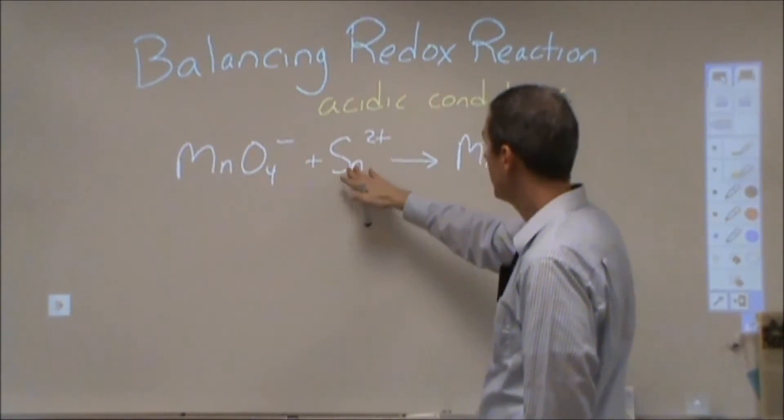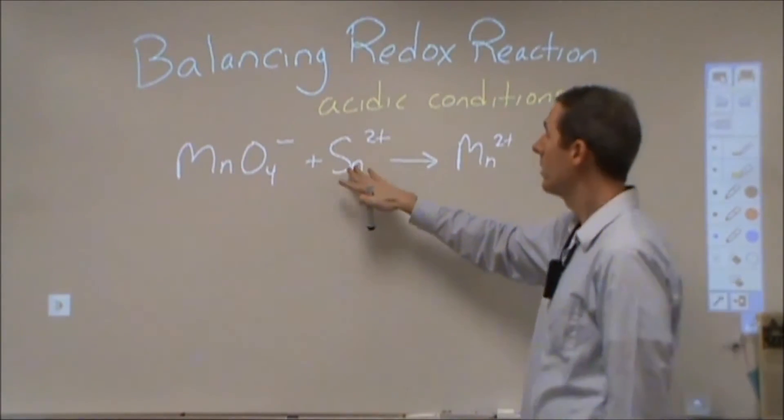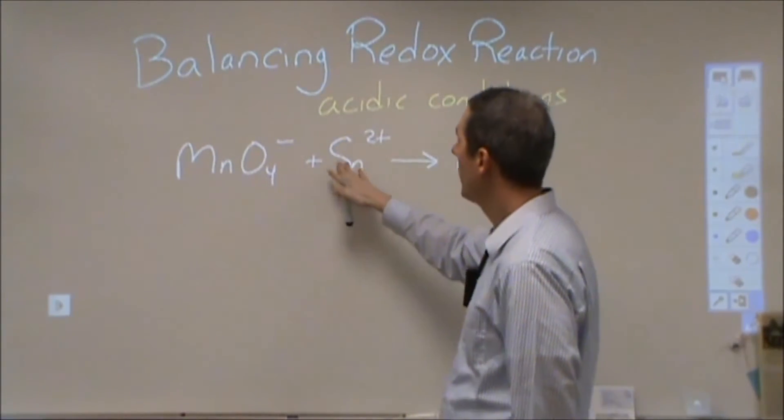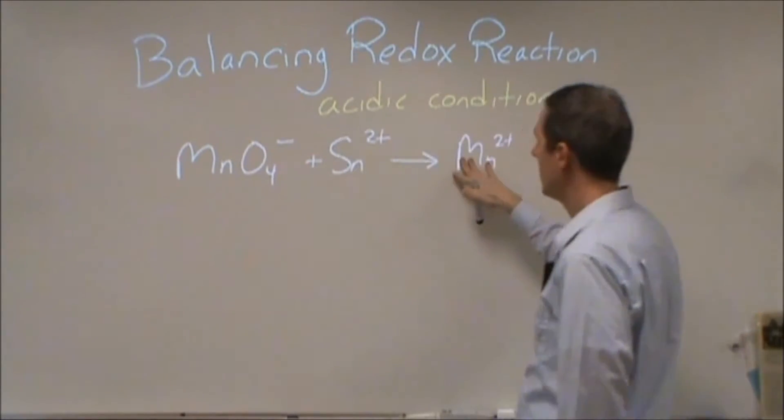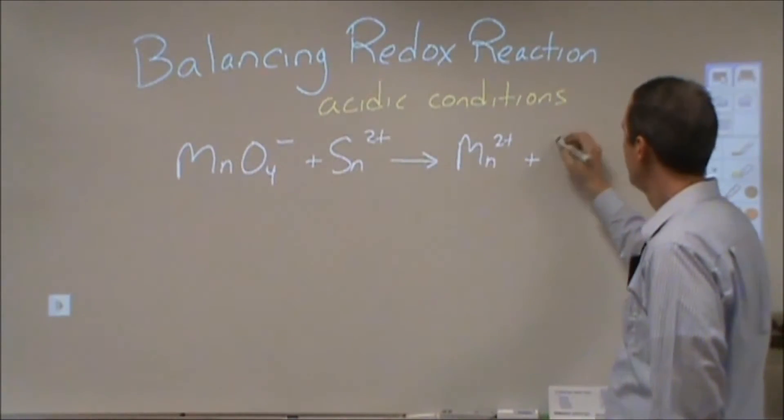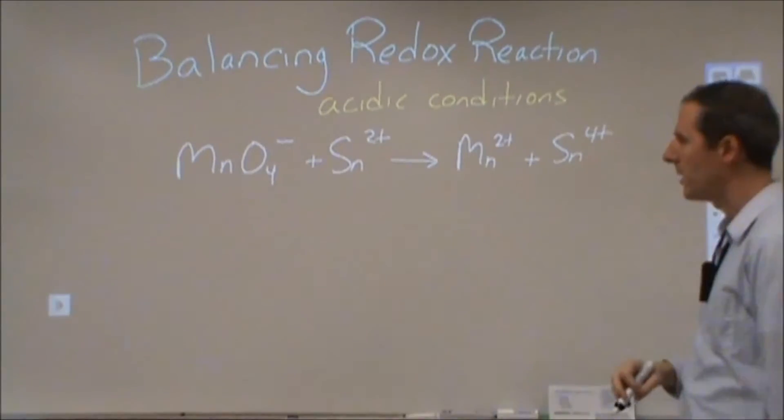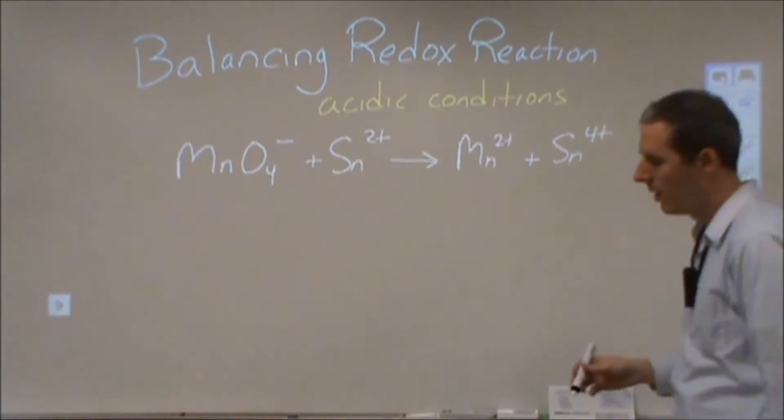In this particular one, we have Sn2+ that can turn into Sn metal or it can turn into Sn4+. So to figure out which one it's going to do, we would look at this one to see what's going on there. And I'm going to justify that in a second why we know that that makes it turn into Sn4+.